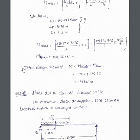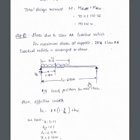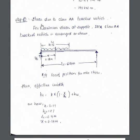Now total design moment will be M equal to the moment due to dead load plus moment due to live load, so that is 191 kilonewton meter.